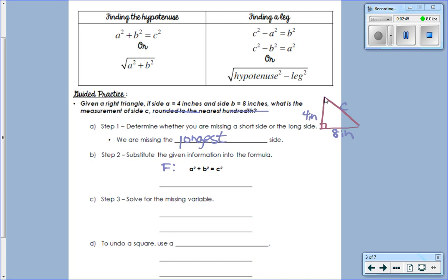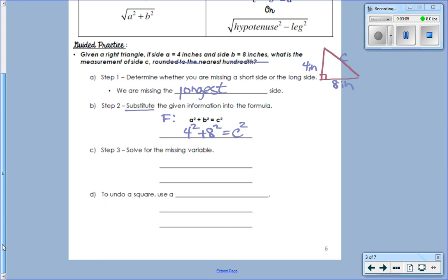The next thing we're going to do is substitute in our measurements. In A, we said it was going to be 4 squared. B, we're going to substitute in 8 squared equals C squared. And now that we have written the formula, we've substituted in our numbers. We're now going to solve.